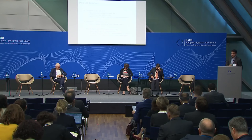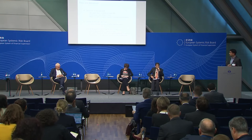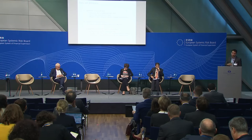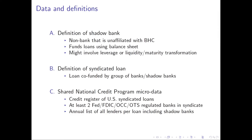Just to settle on some definitions so we're all on the same page: I'm going to be talking about non-banks that are unaffiliated with bank holding companies. Many of the shadow banks people think about will either have direct connections to bank holding companies through direct organizational affiliations or through guarantees — I'm going to be focusing on unaffiliated institutions. These institutions fund corporate loans with their balance sheet; for instance, an asset manager that holds a corporate loan on the balance sheet as opposed to distributing it immediately after purchase.